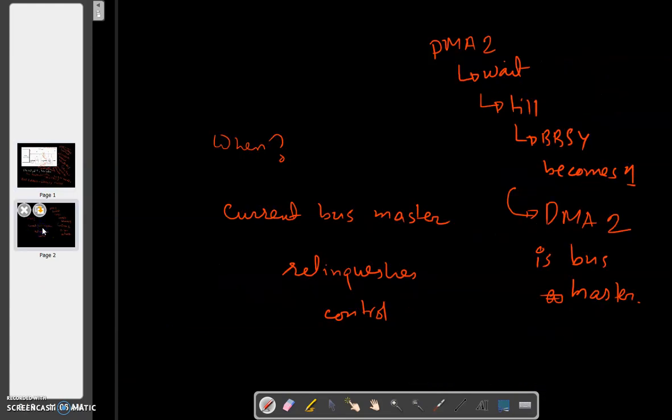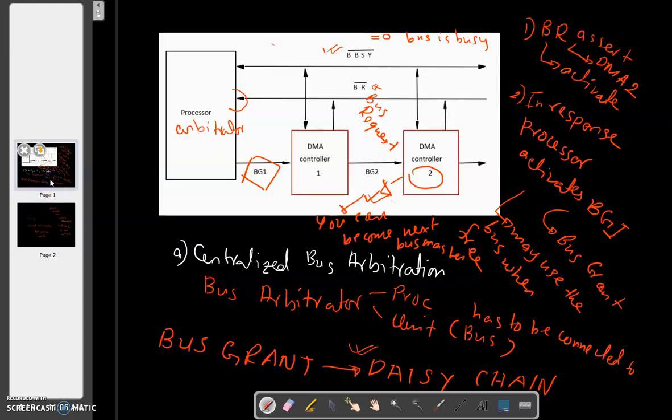When the current bus master relinquishes control. That is only when DMA 2 can become the bus master. That means there is no other device transferring anything over the bus. Only then can DMA 2 become the bus master.